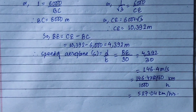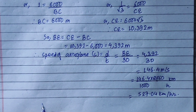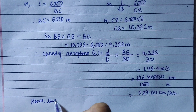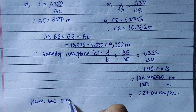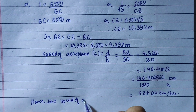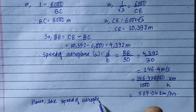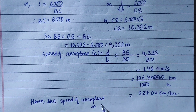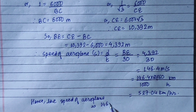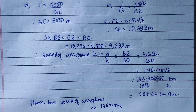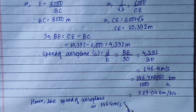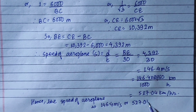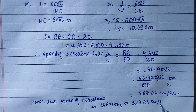So as a conclusion, the speed of the aeroplane is 146.4 meters per second, or generally in kilometers per hour, the speed of the aeroplane is 527.04 km per hour.